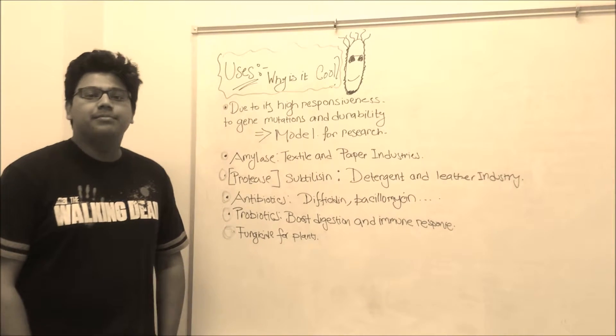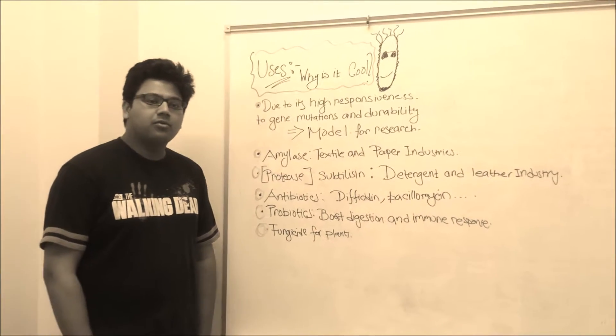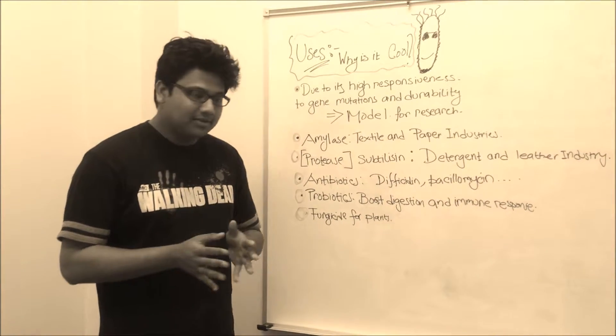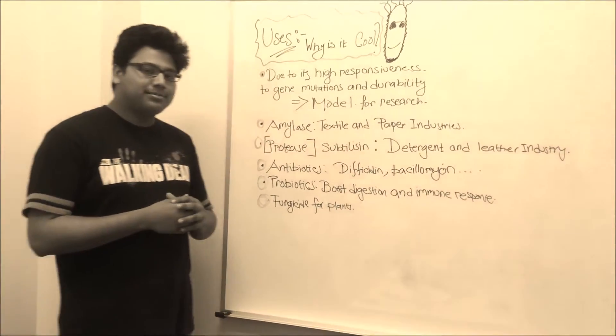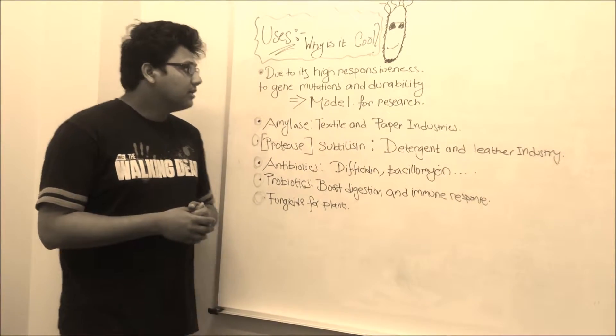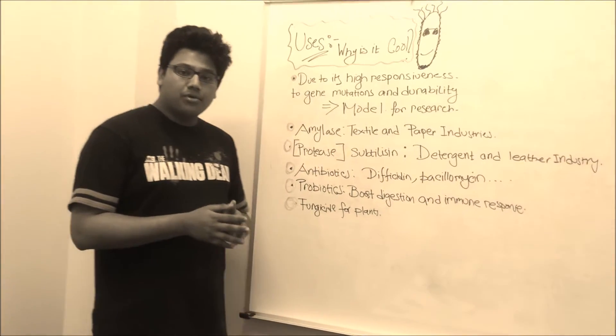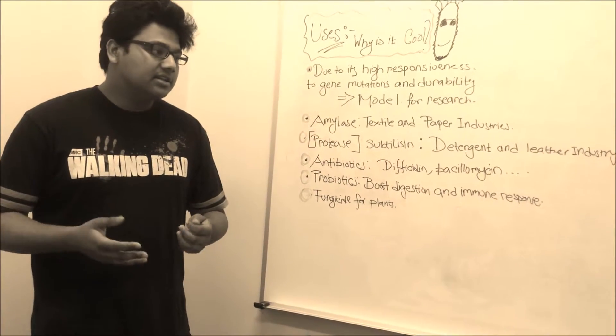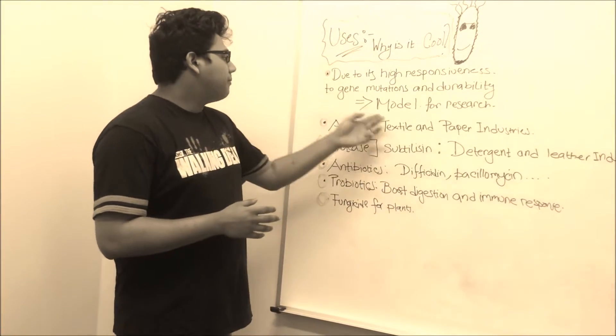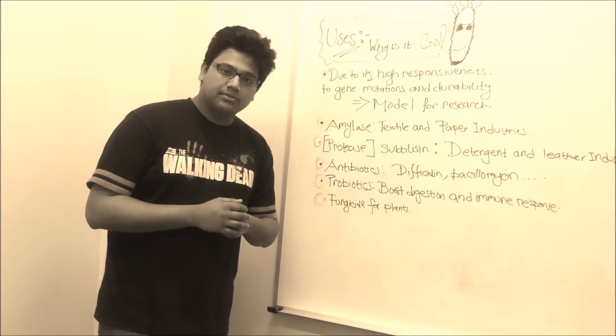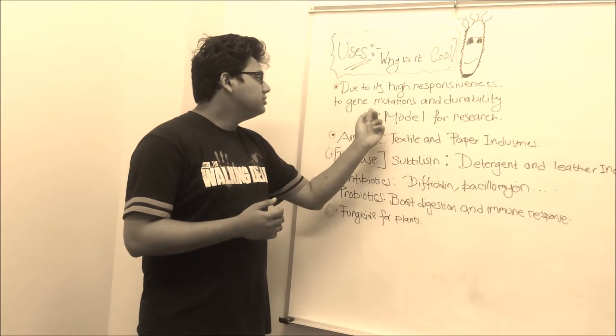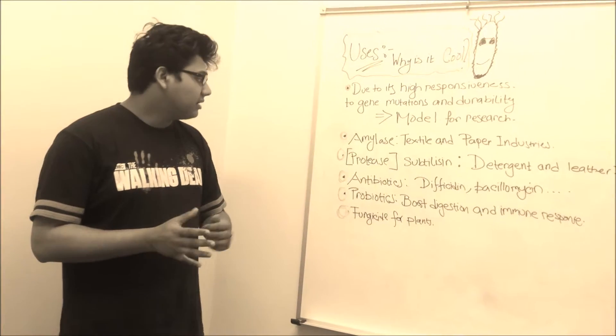So why are we talking about B subtilis so much? Why is it so important? Of course, I need to turn in this project for a grade. But other than that, B subtilis has a widespread use and it has applications. And that makes it so cool. Apart from all the ecological importance it has and the symbiotic relationship it has with plants, it is also a perfect model for research. Why? Because B subtilis can respond to gene mutations and it is also very durable.